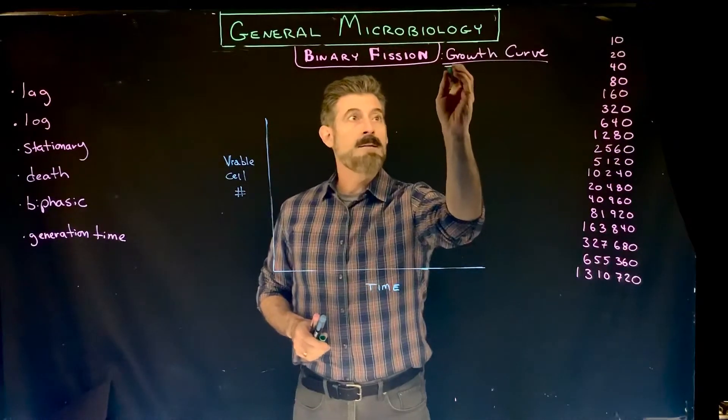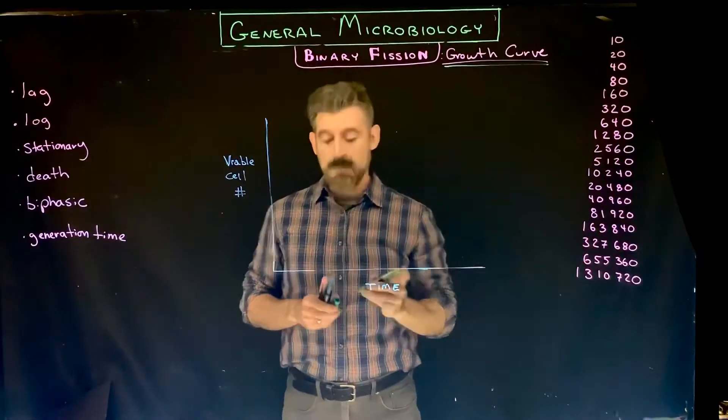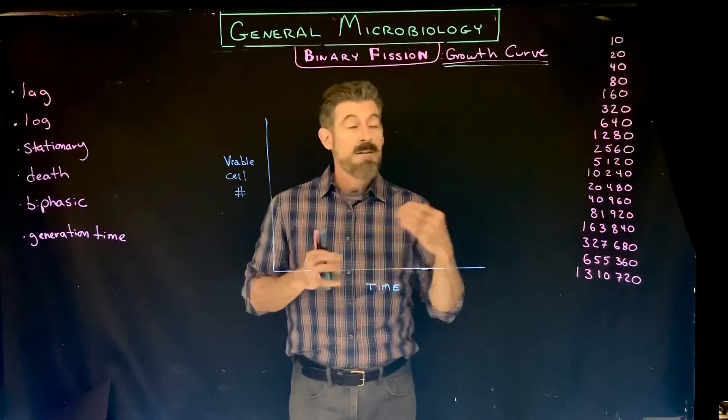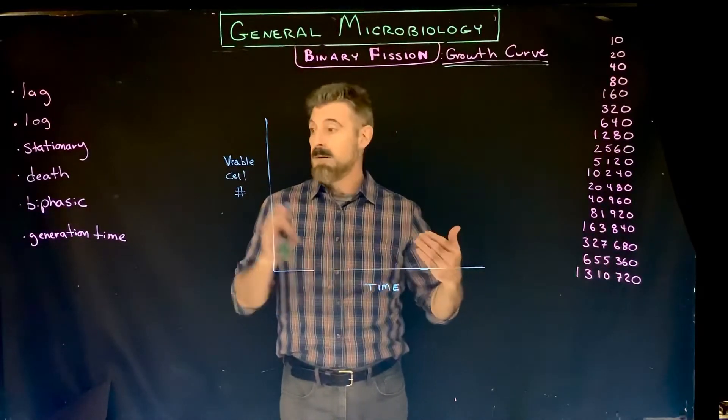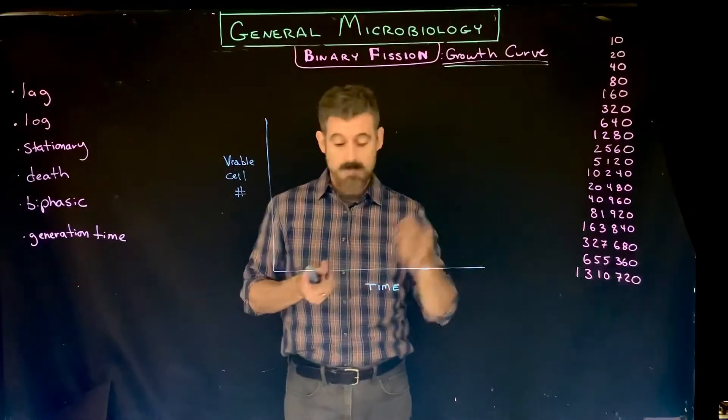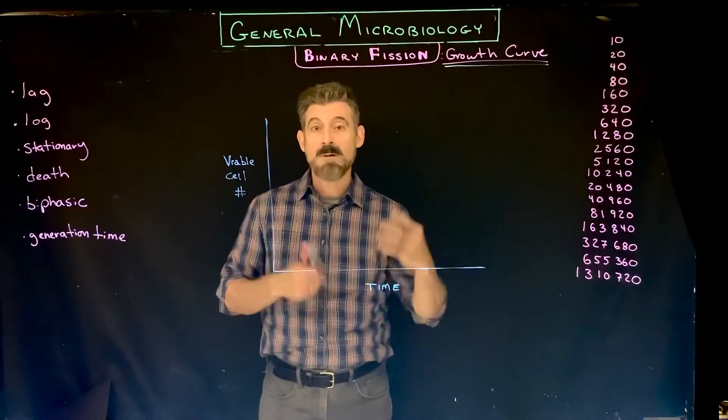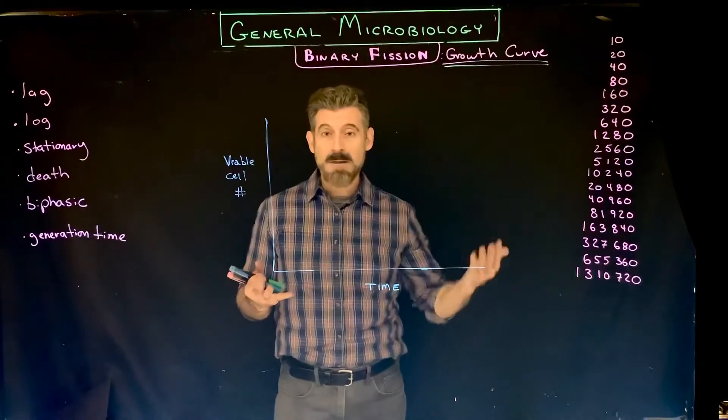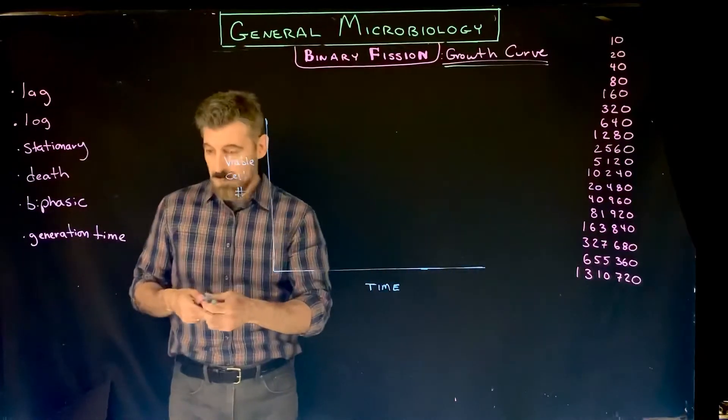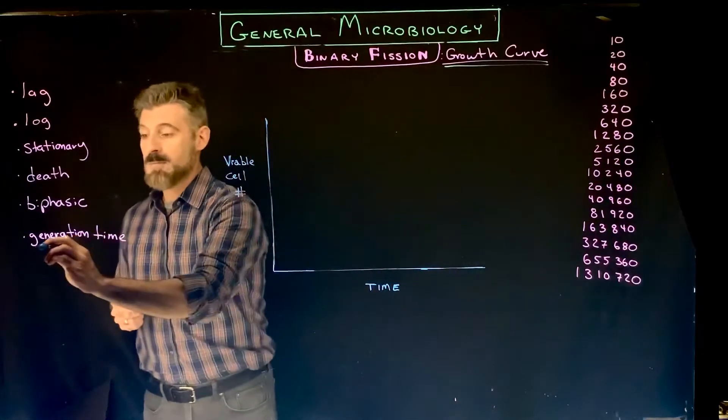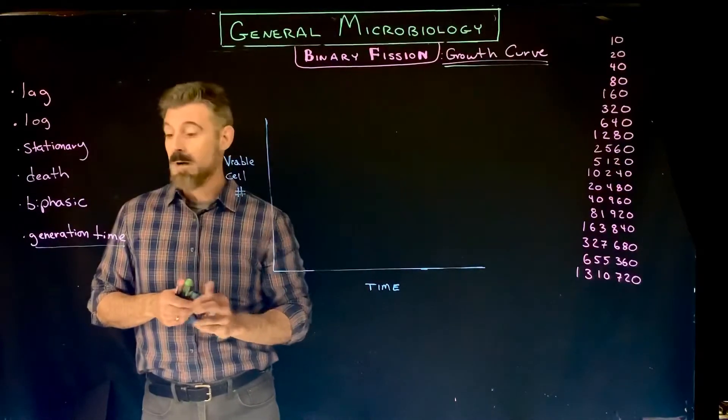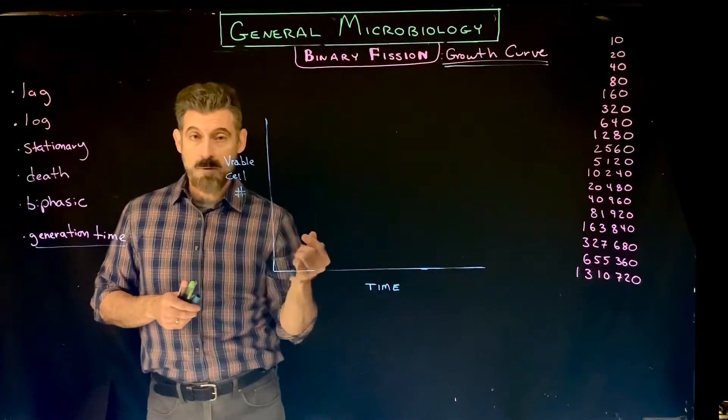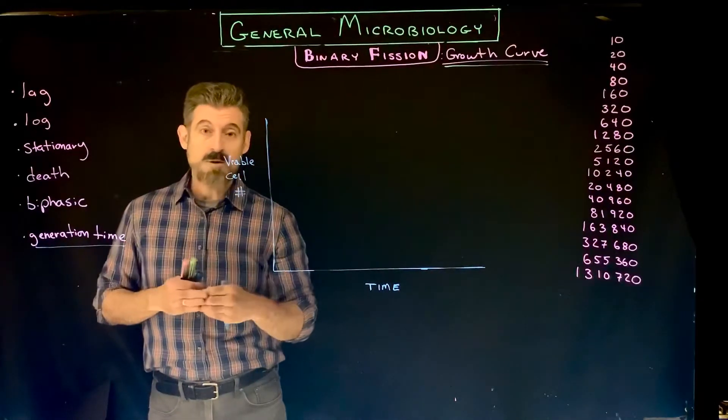Now we're going to look at the bacterial growth curve. As cells undergo binary fission and start to divide, they're going to double for every generation. So you have one cell that becomes two, then four, then eight, then sixteen, and so forth. The number of cells keeps doubling. The time it takes for them to double is called the generation time. In general it might be 40 minutes or so, but depending upon the number of origins of replication, like for E. coli, it could be shorter, once every 20 minutes or so.